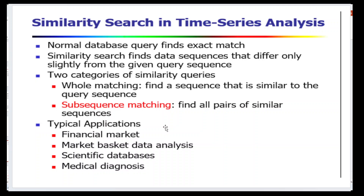Similarity search in time series analysis: a normal database can find exact query matches, while similarity search finds data sequences that differ only slightly from a given query sequence. There are two categories: whole matching similarity queries, which find a sequence similar to the query for its entire length, and subsequence matching, which finds all pairs of similar sequences where at least one portion matches the query sequence.